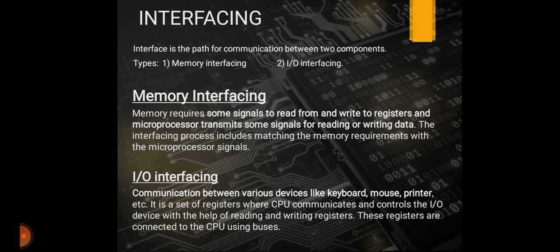The next type is input/output interfacing. Communication between various devices like keyboard, mouse, printer, etc. constitutes input/output interfacing — communication between input and output devices. It is a set of registers used to control input and output devices, where the CPU communicates and controls I/O devices by reading and writing registers. These registers are connected to the CPU using buses such as address bus and data bus.